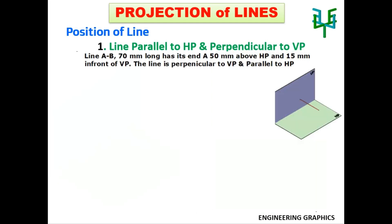Consider a problem: A line AB, 70mm long, has its end A 50mm above HP and 15mm in front of VP. Further, the line is parallel to HP and perpendicular to VP.